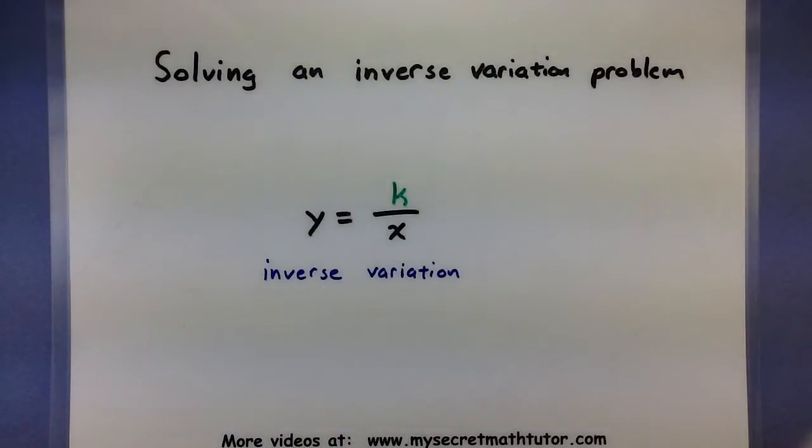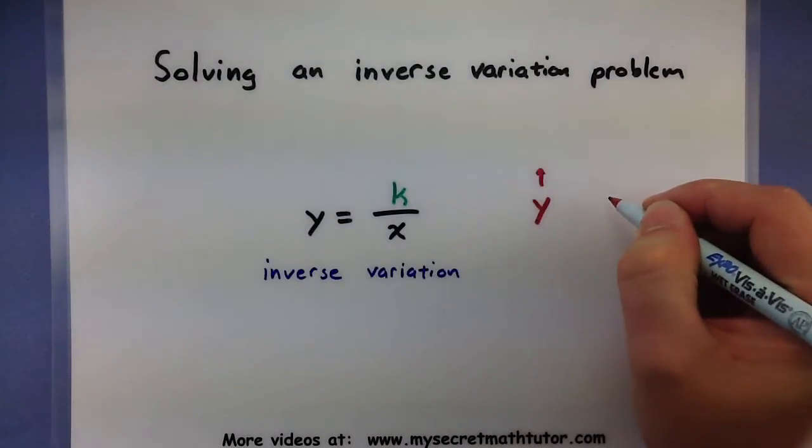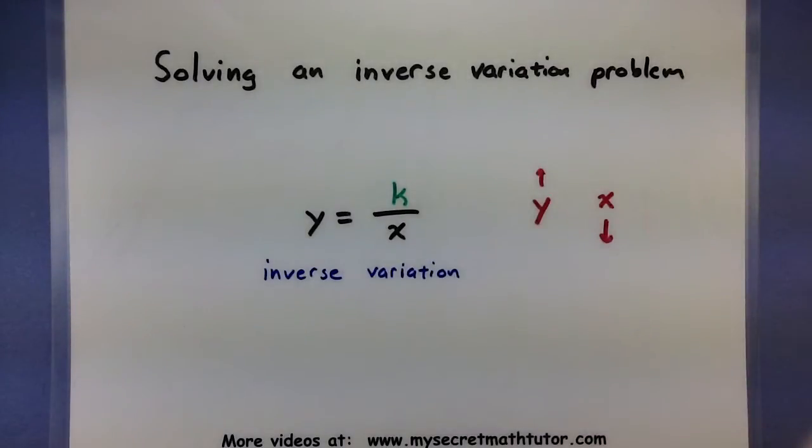Now remember that with inverse variation we have a formula that looks like this. But the basic connection between the variables, say y and x, is that they're going in opposite directions. So every time that y increases, x would decrease, or every time that y decreases or gets smaller, then x would increase.